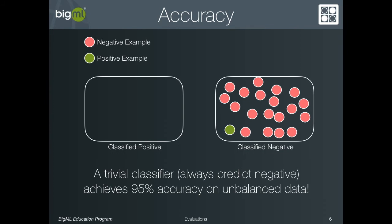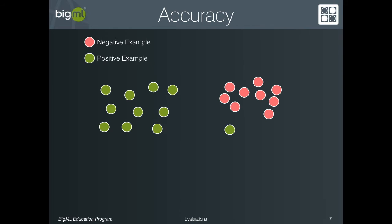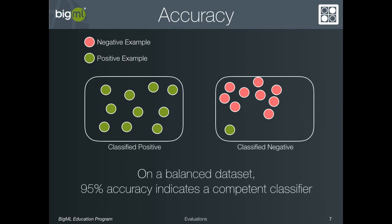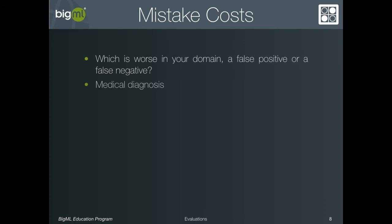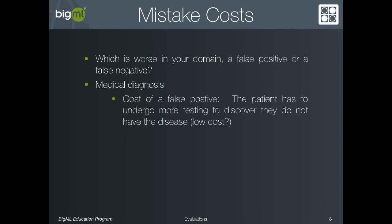On the other hand, for a balanced dataset, 95% accuracy may indicate a competent model. Moreover, there may be one class you care about more than another. A classifier that identifies most of the people who have a disease but misses some of them might not be as good as a classifier that identifies all of the people who have the disease but introduces a few false positives. It depends on how you view the relative costs of false positives and false negatives, and this depends on your data and application.